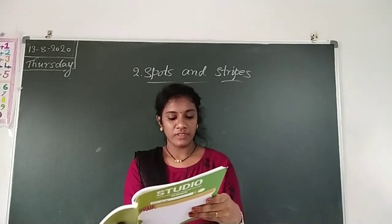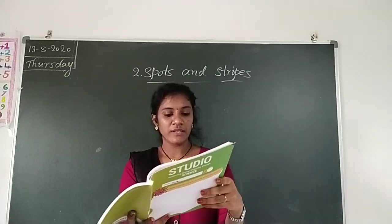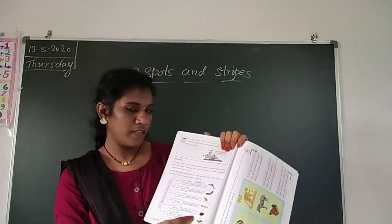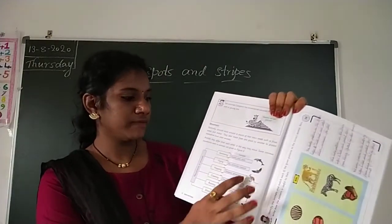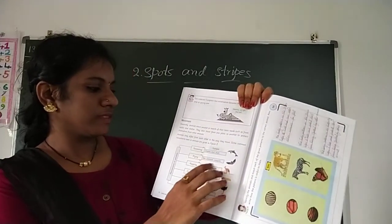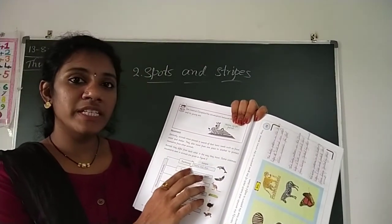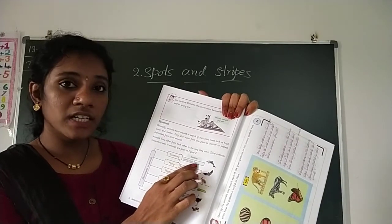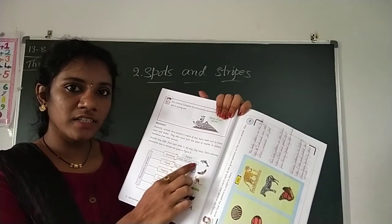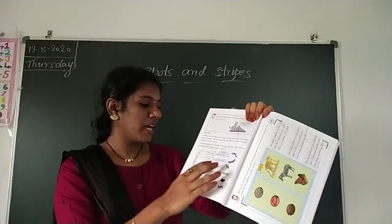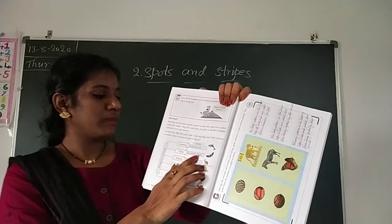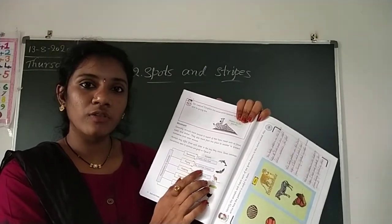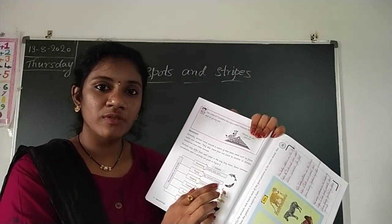Look here, children. Some animals are given. Some animals are swimming — like dolphin, dove, and shark. They move by swimming. And some animals are flying.